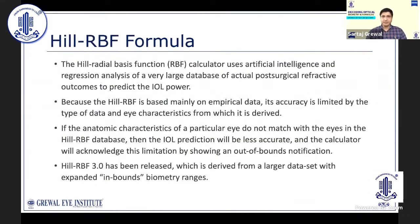The Hill Radial Basis Function Calculator uses artificial intelligence and regression analysis to predict IOL power. Since the formula is based mainly on empirical data, its accuracy is limited by the type of data and eye characteristics from which it is derived. The calculator gives an out-of-bounds notification if anatomical characteristics don't match its database. However, Hill RBF version 2 and more recently version 3 are derived from much larger datasets, so the chances of an out-of-bounds notification have reduced.